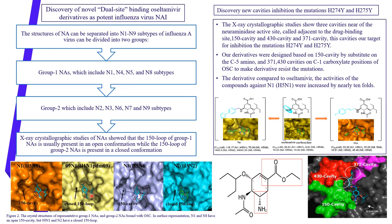Next, I will describe the cavities used to inhibit mutation. We have three cavities: the 150 cavity, the 430 cavity, and the 371 cavity. In the picture we can see the active site, with the 371 cavity shown in pink, the 430 cavity in red, and the 150 cavity in green. These are our targets for inhibiting the resistant virus. Regarding how substitution acts on these cavities: in oseltamivir, substitution at carbon 5 allows action on the 150 cavity.